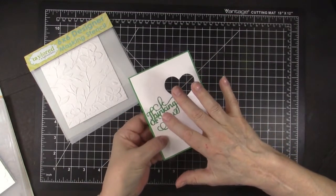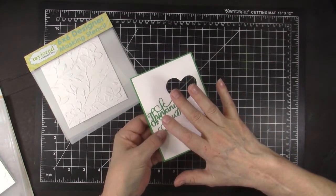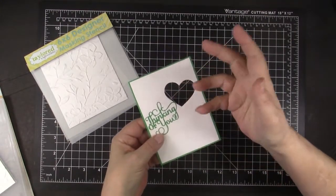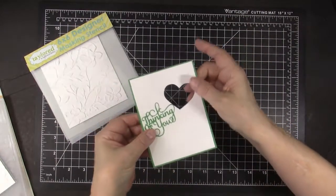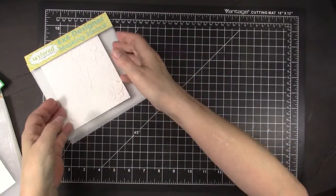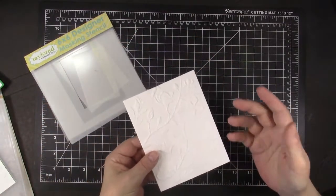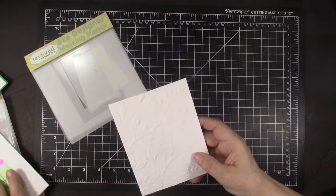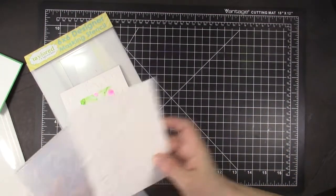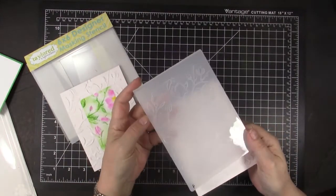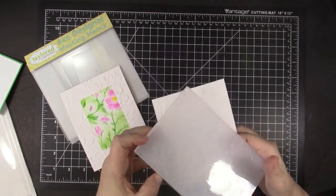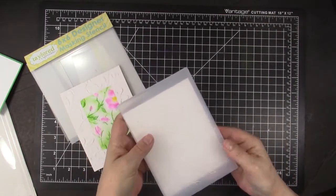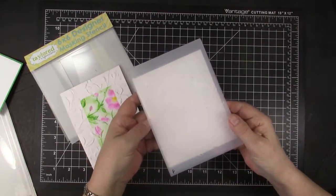So that piece is ready to go. This Thinking of You is a Sue Wilson die that's one of my favorites. And I just used a heart die to cut that hole out of both pieces that's going to go on the inside. I'm not going to show you how to emboss in embossing folders. But in essence, if you've never done it, you have something like this.